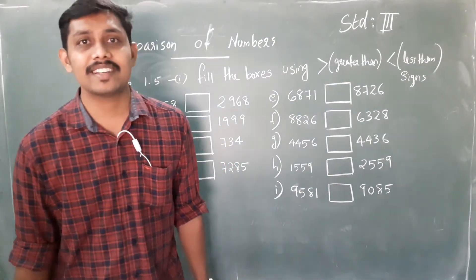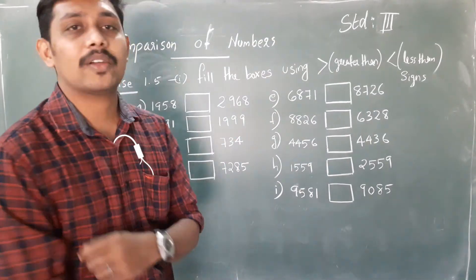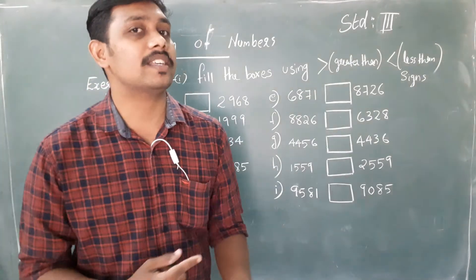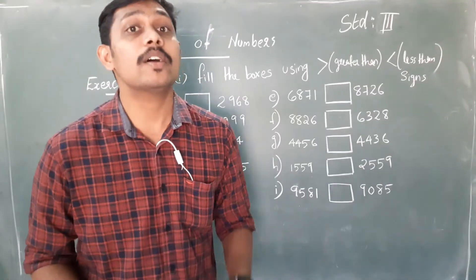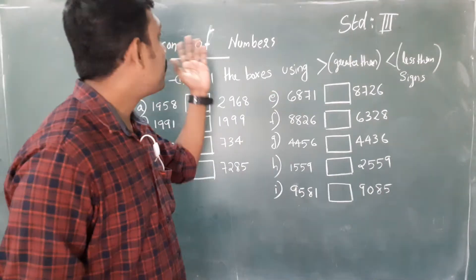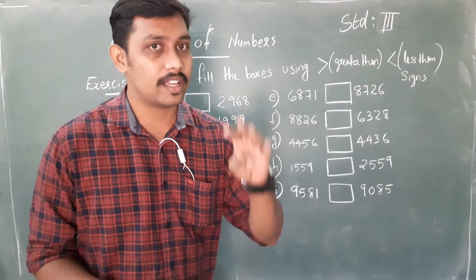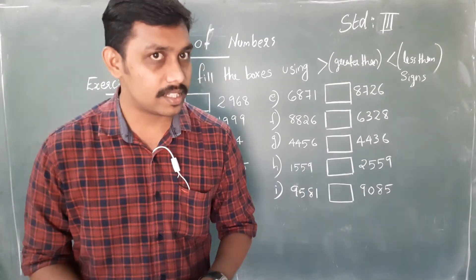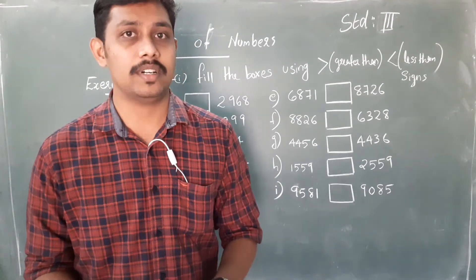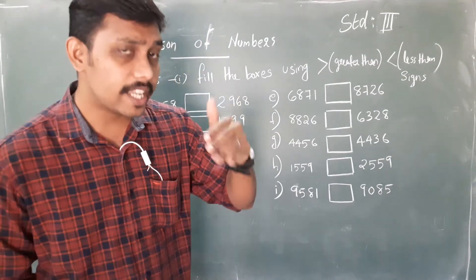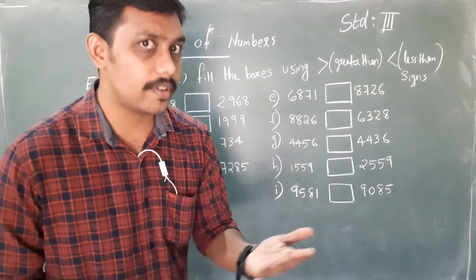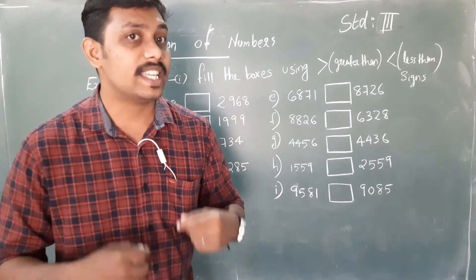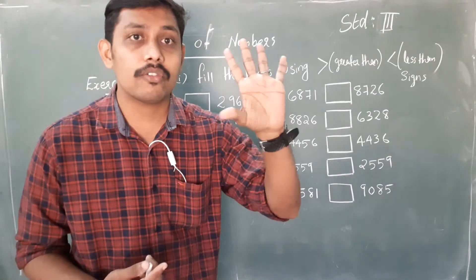Good morning everyone. Today we are going to discuss a new topic. Before that, in the previous class we discussed about comparison of numbers. In this chapter, we are dealing with four-digit numbers. In the previous class, we discussed comparison of numbers and we studied five rules.